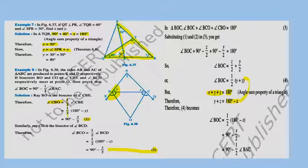Now for the second triangle, we can use the exterior angle property. Taking triangle PSR, angle Y is the exterior angle of triangle PSR. So angle Y equals angle SPR plus X. We know X equals 50, so substituting: Y equals 30 plus 50 equals 80 degrees.